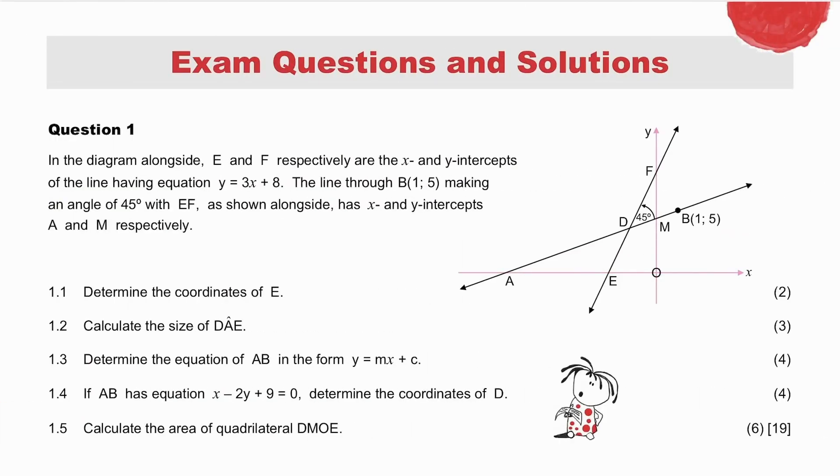Pause while you try question 1. I would like to suggest an approach, a way of thinking. Note the significance of the information. Axis intercepts E and F, and again axis intercepts A and M. Line EF having the equation y equal to 3x plus 8, true for all points on the line. And angle of 45 degrees here, equal to vertically opposite angle ADE. Maybe pause to try the questions again.